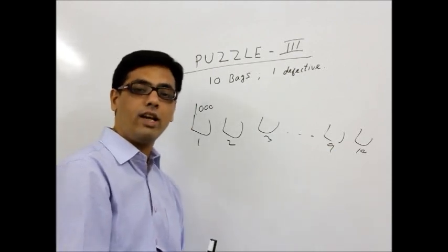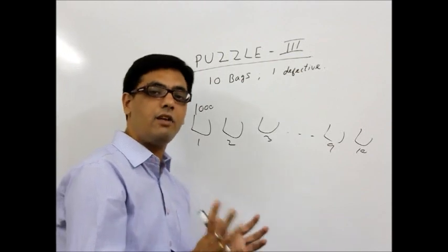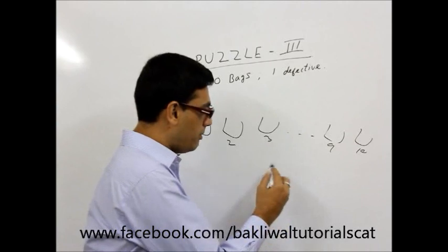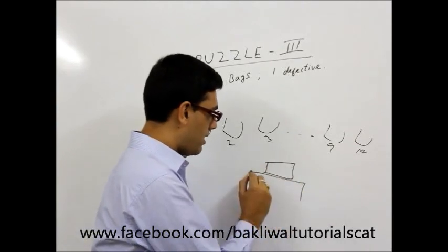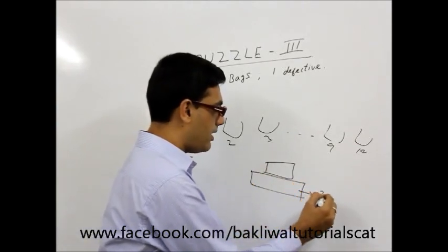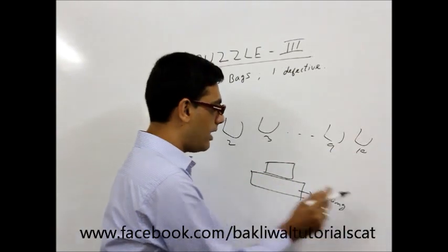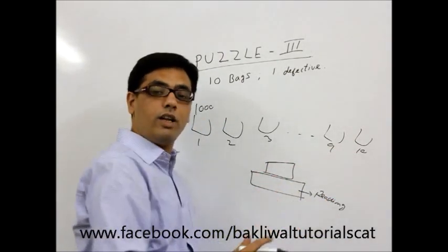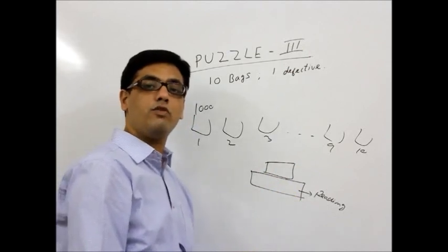There is an electronic weighing digital balance with us. What is electronic digital balance? You put something on the pan and this is a reading display. The reading counts how many grams we have put in. So there is an electronic digital weighing balance with us.